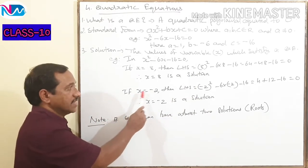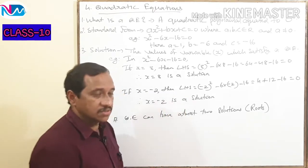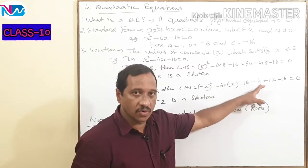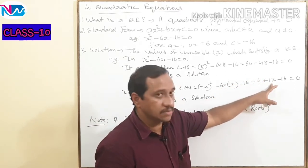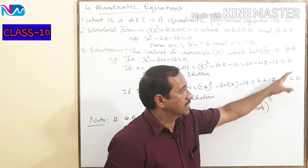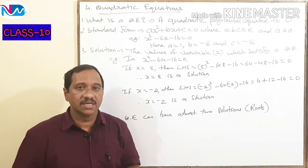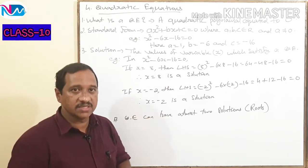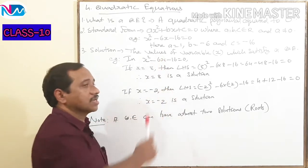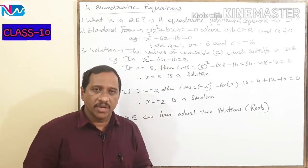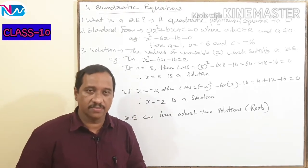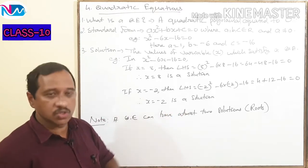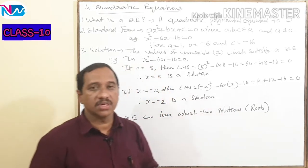Similarly, if you replace x with -2, then LHS becomes (-2)² - 6(-2) - 16 = 4 + 12 - 16 = 0. So x = -2 also satisfies the quadratic equation. Hence, x = -2 is also a solution. A quadratic equation can have at most two solutions. In the same sense, a quadratic polynomial can have at most two zeros. The solution of a quadratic equation is also called the root of the quadratic equation.